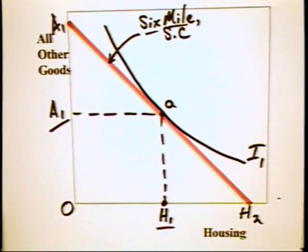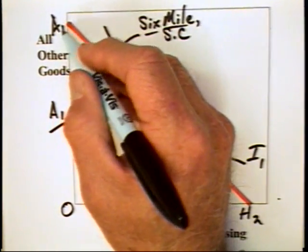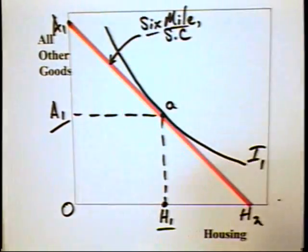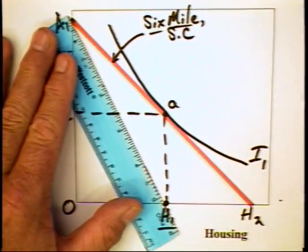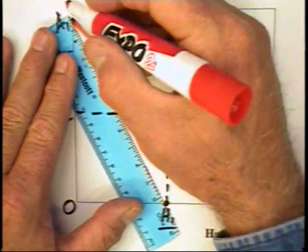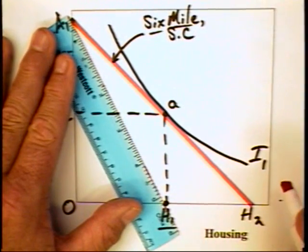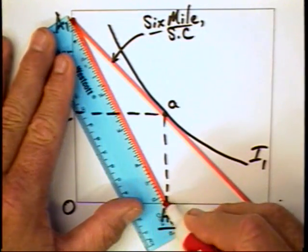Now, suppose your firm wants to hire this individual from Six Mile and move him to where your headquarters is. Let's assume it's in Irvine, California, which is a very high cost housing area. The costs of most things from clothing to food are pretty much the same in Irvine as they are elsewhere in the country. This means that in Irvine, with $100,000 of income, this individual can buy A1 of all other goods just as he could in Six Mile. But with $100,000 of income in Irvine, the individual can only buy H1 of housing, much less than what he could buy in Six Mile, South Carolina.